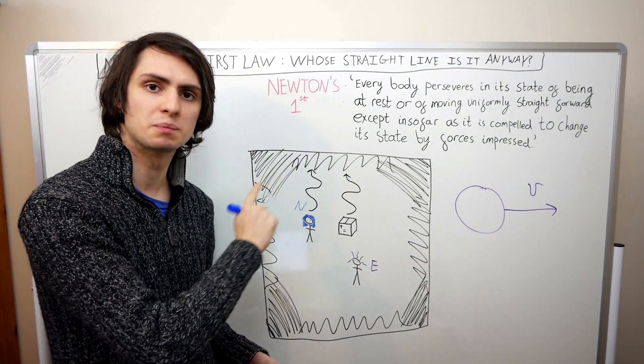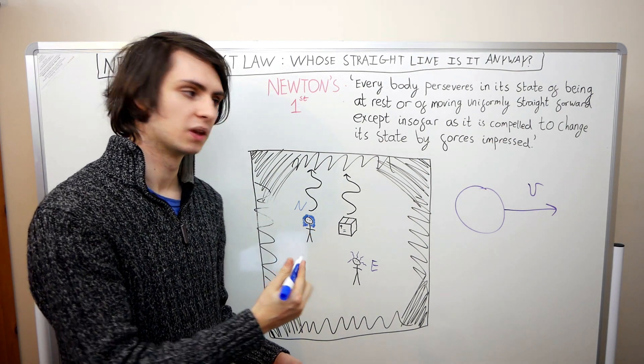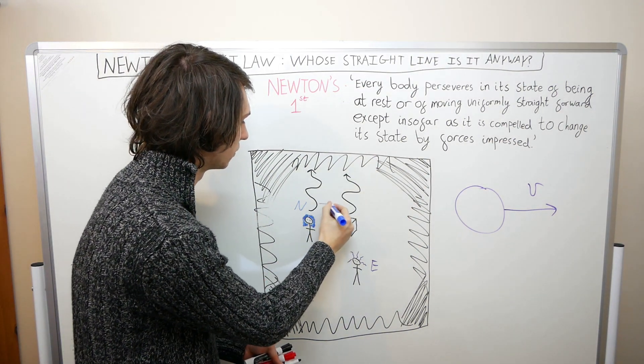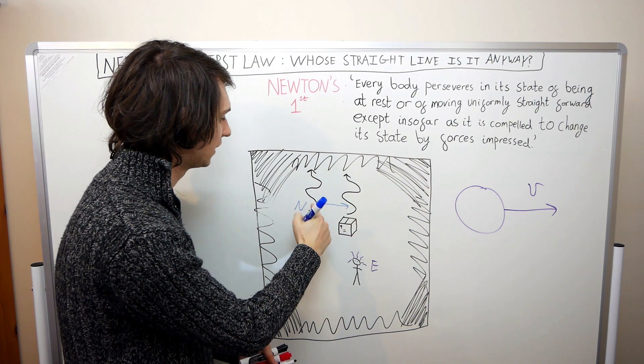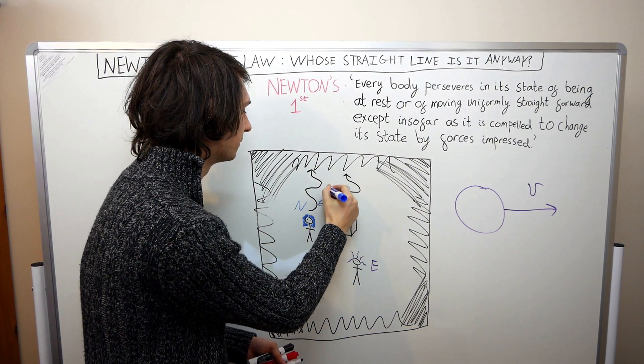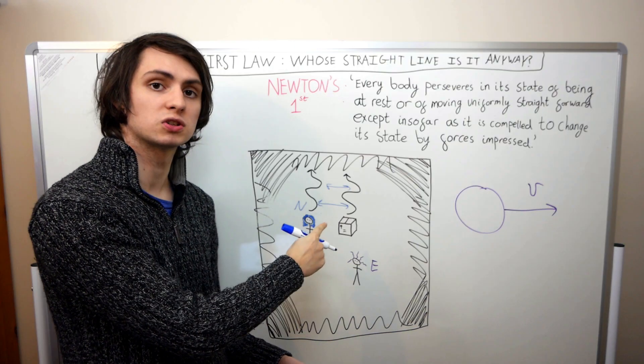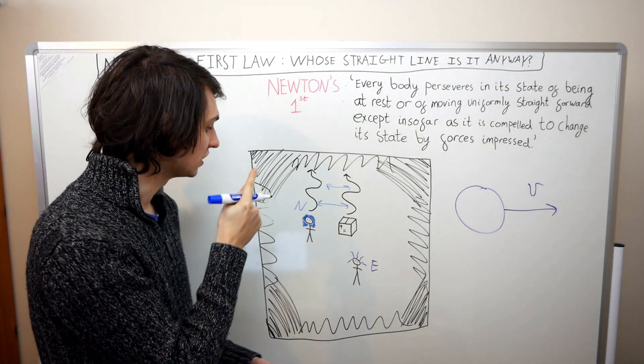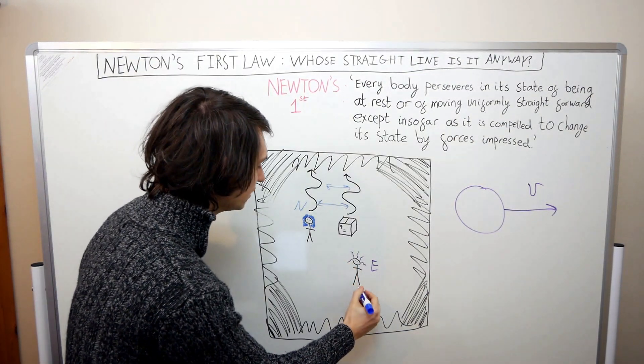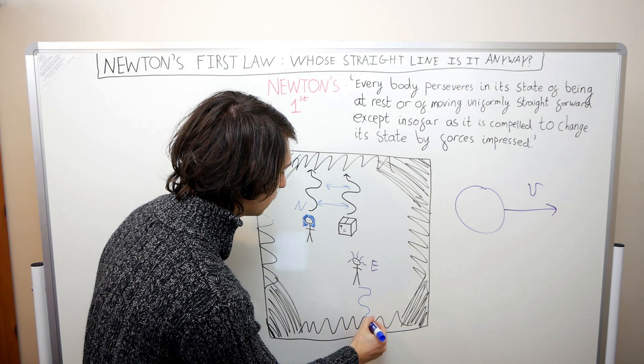You see, if Newton and the box are wiggling in sync like this, then Newton will actually see him and the box as being stationary. Because if you look at the wiggles, so long as they're moving at the same rate, then the distance between them will always be the same. Okay, so Newton sees the box as being stationary.